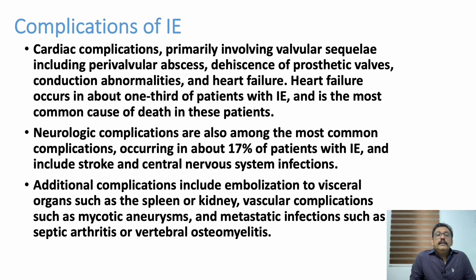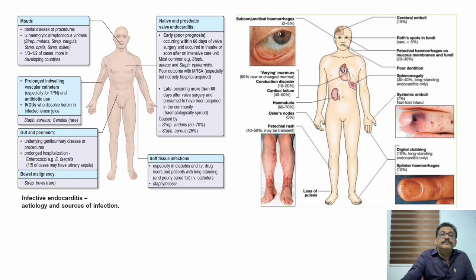Cardiac complications mainly involve the valves — it can produce abscess around the valve. Prosthetic valves can get damaged, producing stuck valves or regurgitating lesions, conduction abnormalities, and cardiac failure. Neurological complications arise from septic embolism to the brain. Other organs also suffer: splenic infarct, kidney infarct, mycotic aneurysm which can rupture, and osteomyelitis.